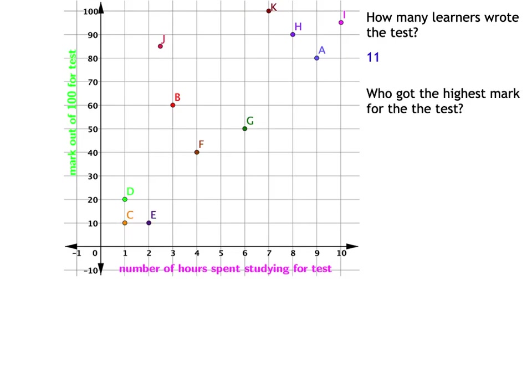Who got the highest mark for the test? Remember, the marks are shown as the y-coordinate. The highest mark will be the highest up. The y-coordinates show how far up you are. If you have a look, you can see that the highest up is learner K, and learner K actually got 100 out of 100, full marks for the test.